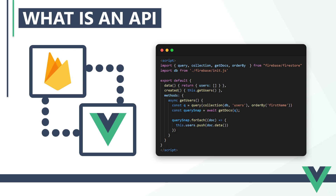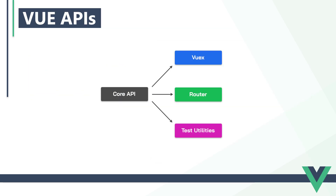Similarly, Vue has a specific way for us to interact with it, like template blocks or lifecycle hooks. But Vue's features and functionality are split up into multiple APIs. It decouples non-essential features from the core functionality so that we can add them only if we need to. For example, we can use the provide and inject APIs that are included in the core package for simple state management.